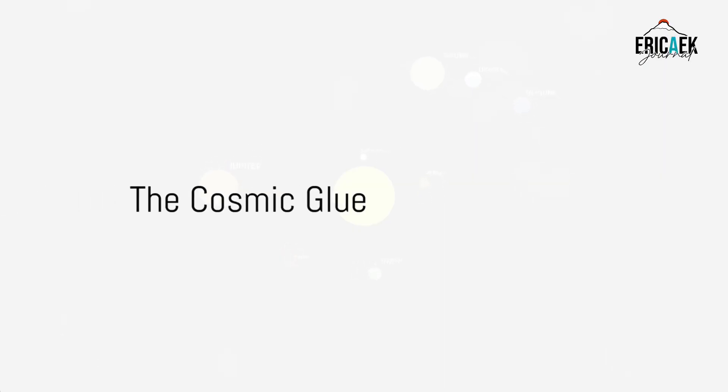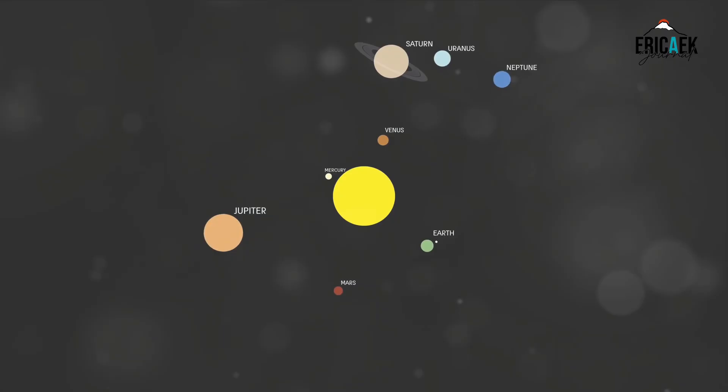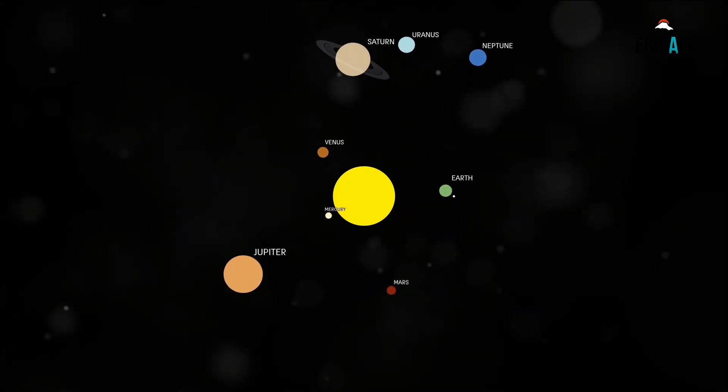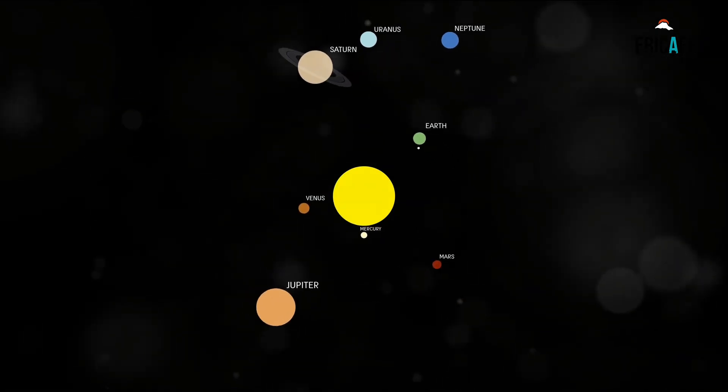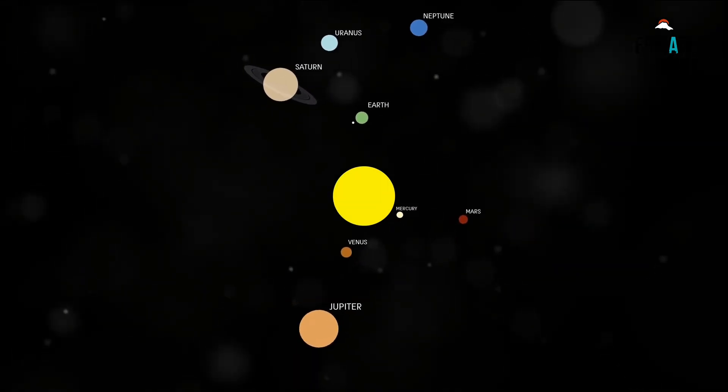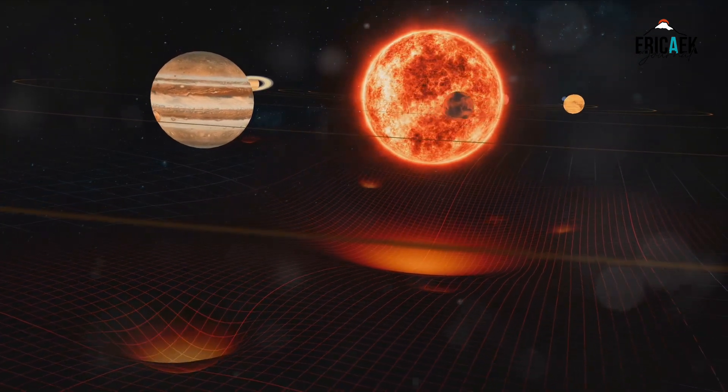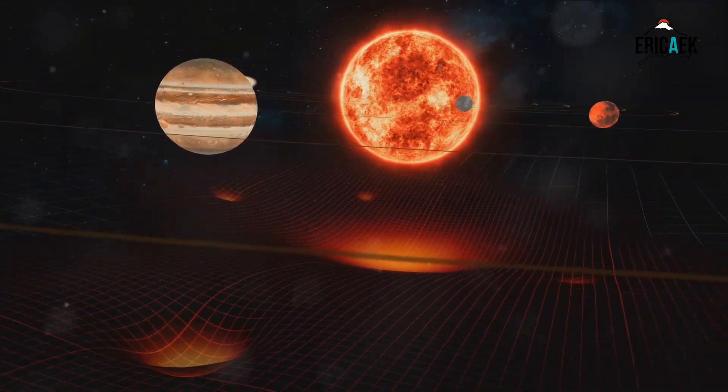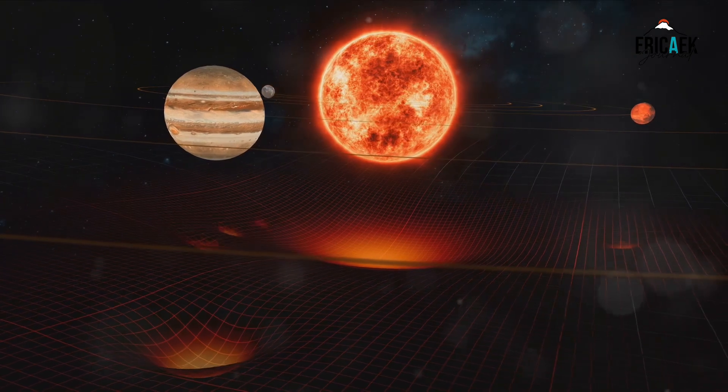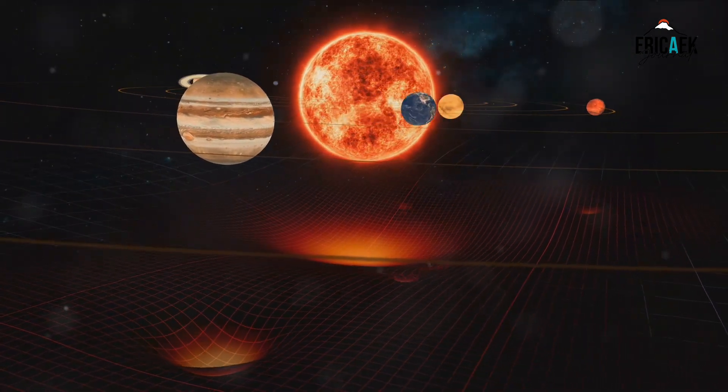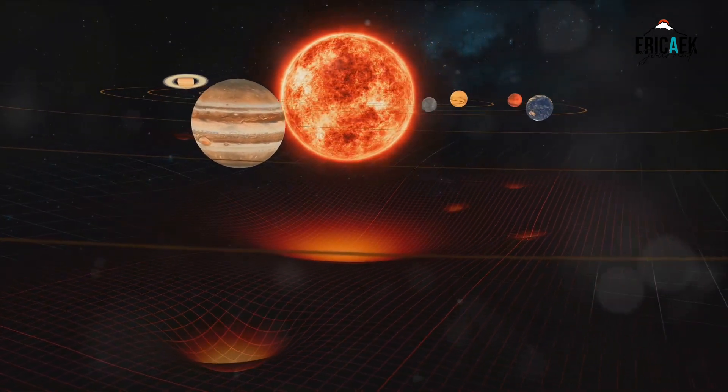Let's start with gravity, the force that pulls us down to Earth. It's the same force that keeps the Moon orbiting around us. But how does this force work on a cosmic scale? To answer that, we need to understand that gravity isn't just an earthly phenomenon. It's a universal law that governs the motion of everything, from the tiniest grains of sand to the most massive celestial bodies.